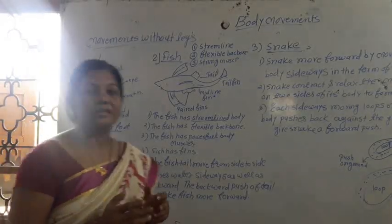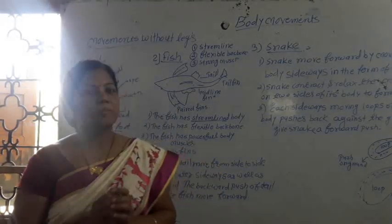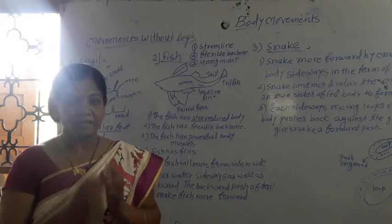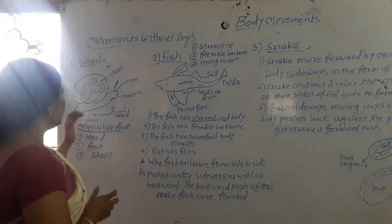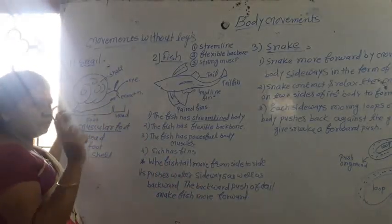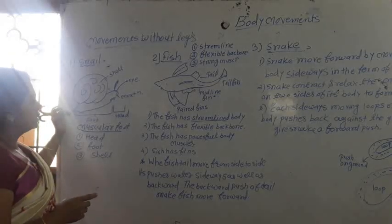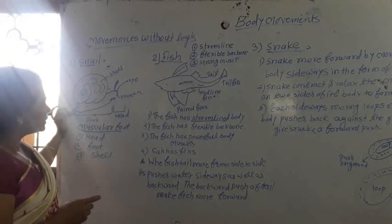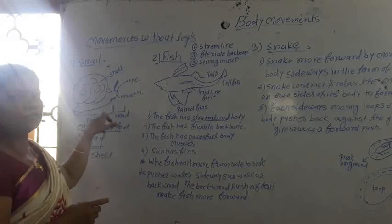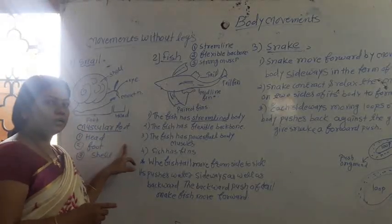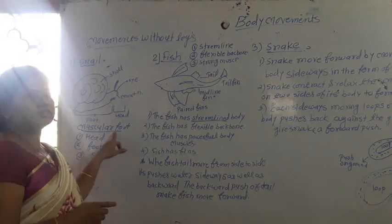When the snail feels threatened, it will take its head and foot into the shell. Snail has only one foot; it is long, flat, and disc-shaped, and is called the muscular foot. The snail moves with the help of this muscular foot.